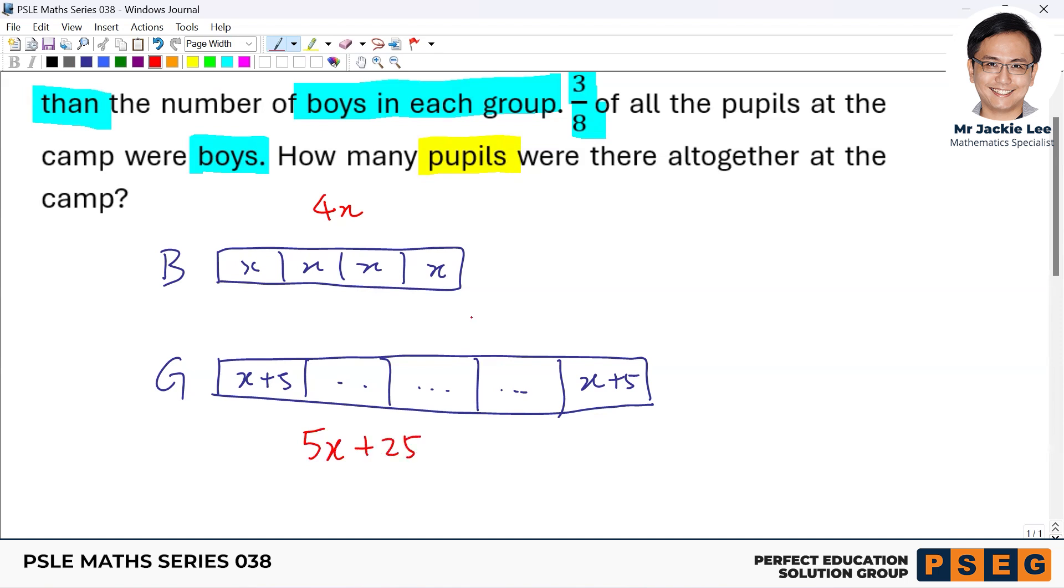Now, in fact, this one we can actually split to 4X plus X plus 25. So in other words, actually this part, this one will be X plus 25. This one is just X plus 25.